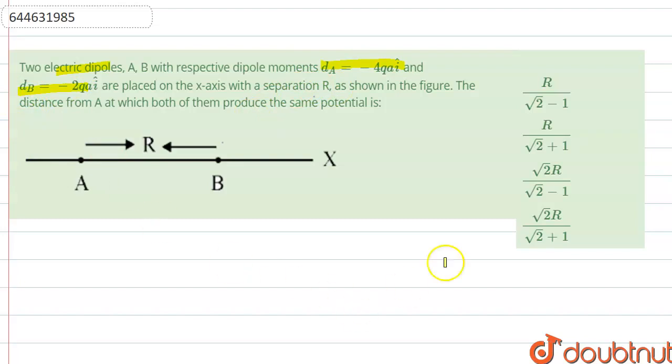The distance from A at which both of them produce the same potential - we have to determine the distance from point A where both of them produce the same potential.